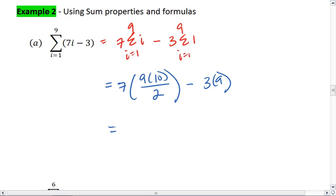This gives me, let's see, 90 divided by 2 is 45, and then 45 times 7 is going to be 315, minus 3 times 9 is 27. 315 minus 27 is going to give me 288.